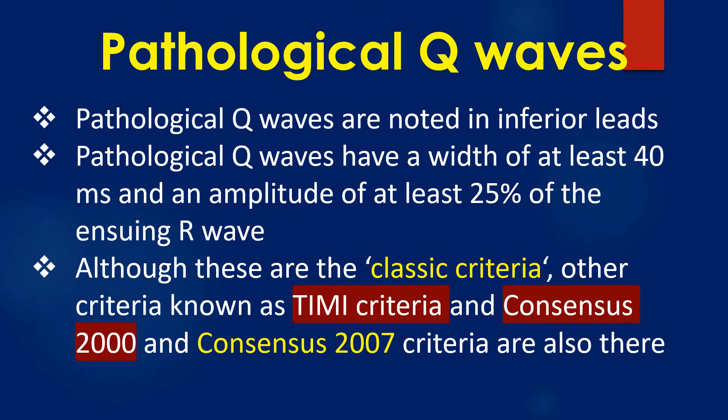Pathological Q waves are noted in inferior leads 2, 3, and AVF. Pathological Q waves have a width of at least 40 ms and an amplitude of at least 25% of the ensuing R wave. Although these are the classic criteria, other criteria — known as TIMI, Consensus 2000, and Consensus 2007 — also exist.